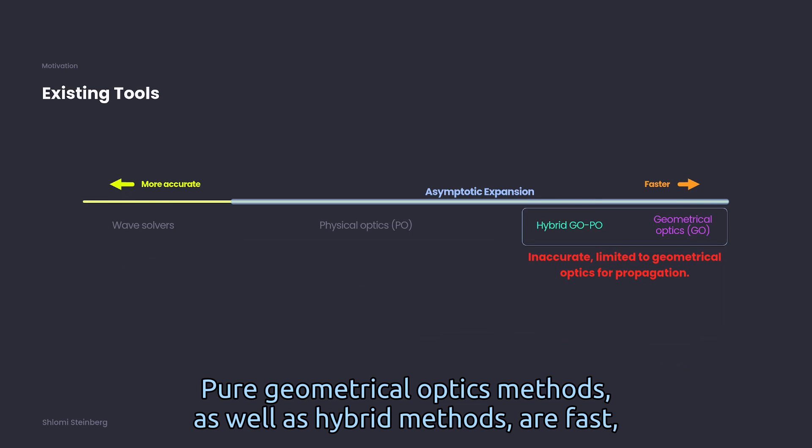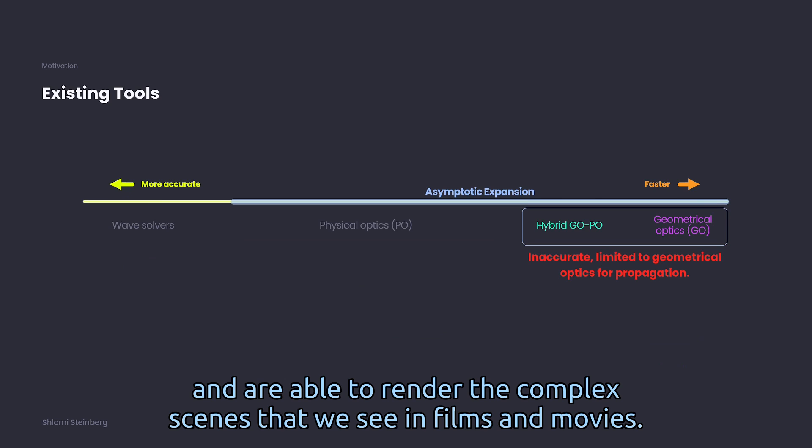Pure geometrical optics methods, as well as hybrid methods, are fast and are able to render complex scenes that we see in films and movies.